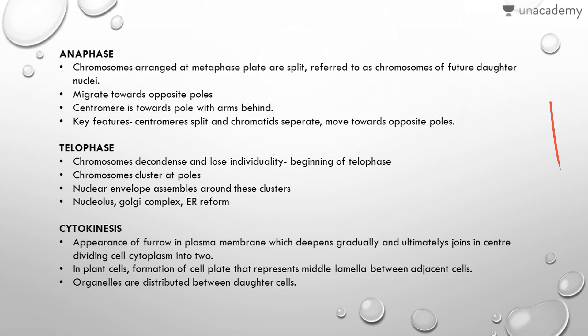In telophase, the chromosomes decondense and lose individuality, forming clusters at the poles. The nuclear envelope reassembles around these clusters, and cell organelles that disappeared in prophase — such as the nucleolus, Golgi complex, and endoplasmic reticulum — reform. After these four phases, cytokinesis occurs, characterized by the appearance of a furrow in the plasma membrane which deepens and ultimately joins in the center, dividing the cytoplasm into two. In plant cells, a cell plate forms, representing the middle lamella between adjacent cells.